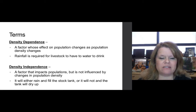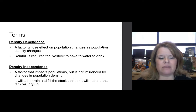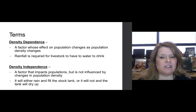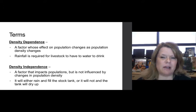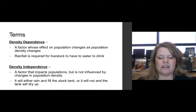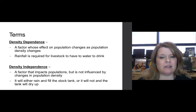Comparing that to density-independence: a density-independent factor impacts populations but is not influenced by changes in the actual number or density of a population. In other words, the numbers in the population aren't a factor here. So it will either rain and fill the stock tank, or it won't — but whether it rains or not is not going to be determined by whether animals die.